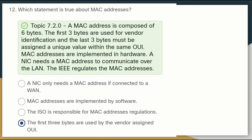Question twelve asks which statements are true about MAC addresses. The first 3 bytes of a MAC address are used by the vendor-assigned OUI. MAC addresses are composed of 6 bytes total — the first 3 bytes identify the vendor and the last 3 bytes must be assigned a unique value within the same OUI. MAC addresses are implemented in hardware, and a NIC needs a MAC address to communicate over a LAN. IEEE regulates MAC addresses.